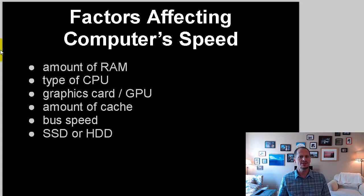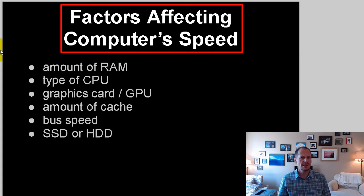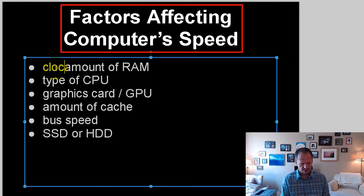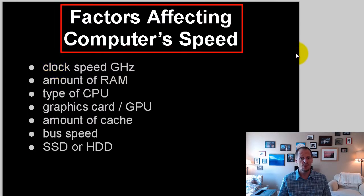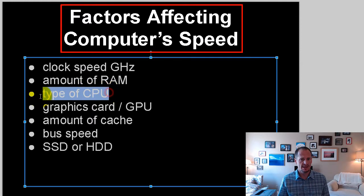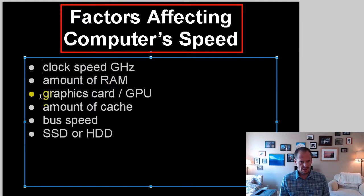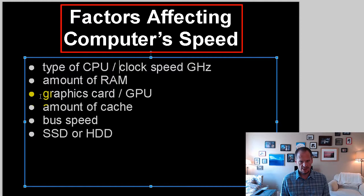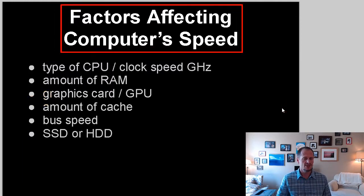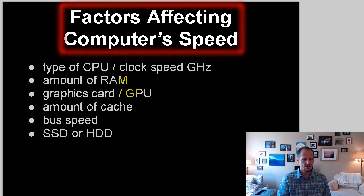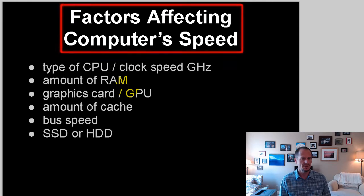But there are several factors that affect computer speed. The clock speed is certainly one of those factors — how fast is the computer able to operate? That would be related to the type of CPU and how fast the clock speed is. So that's one factor that affects computer speed. But another factor is how much RAM does the computer have. So that's another factor that impacts computer speed.